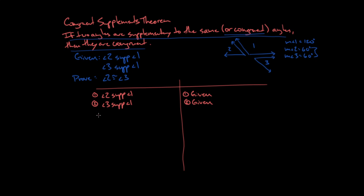So let's go ahead and do that. Statement 1: angle 2 is supplementary to angle 1 — that's given. Statement 2: angle 3 is supplementary to angle 1 — also given. Whenever I want to talk about congruence, I first want to talk about measure. I need equations that relate some measures together, and the only things I know are about these angles being supplementary to each other.